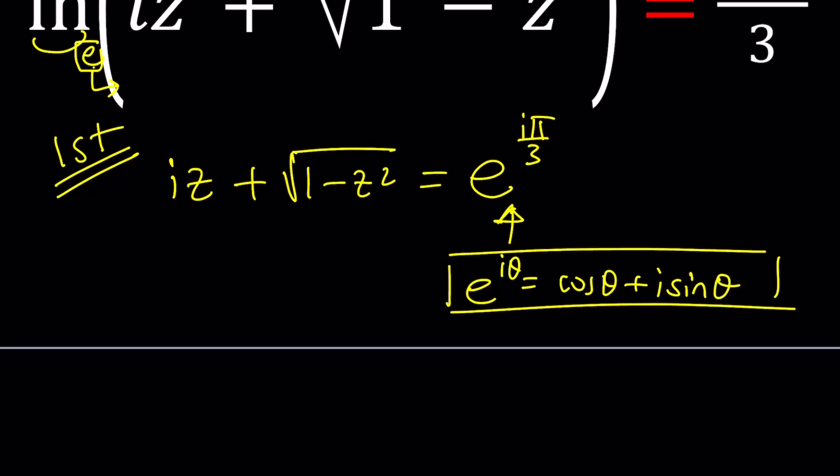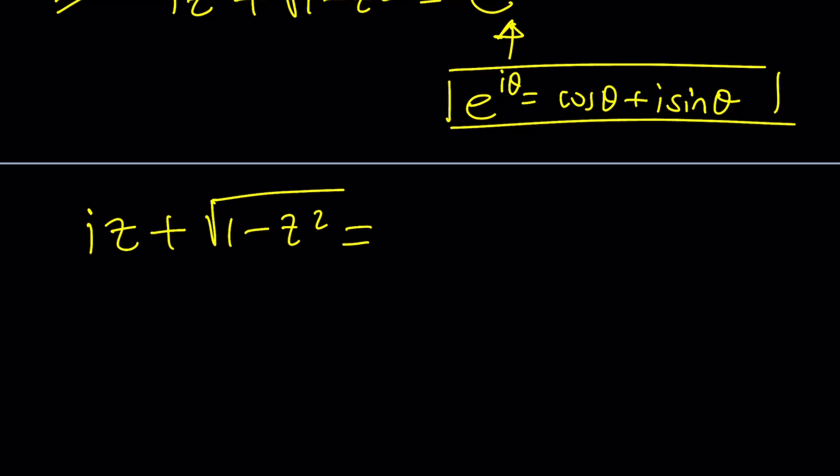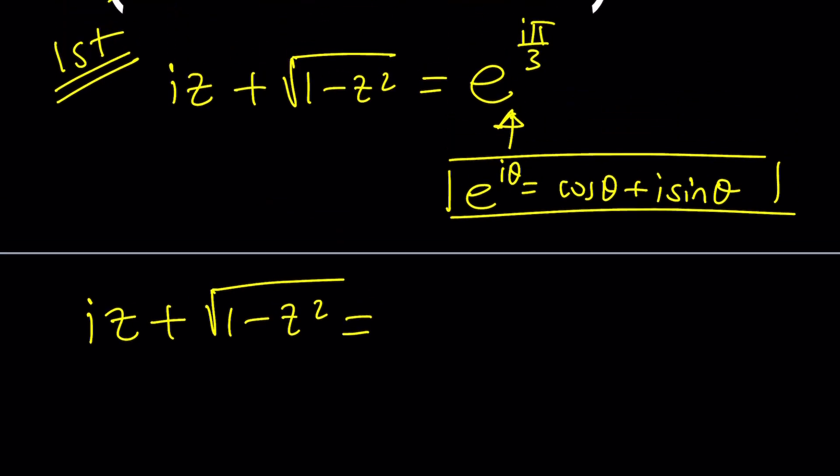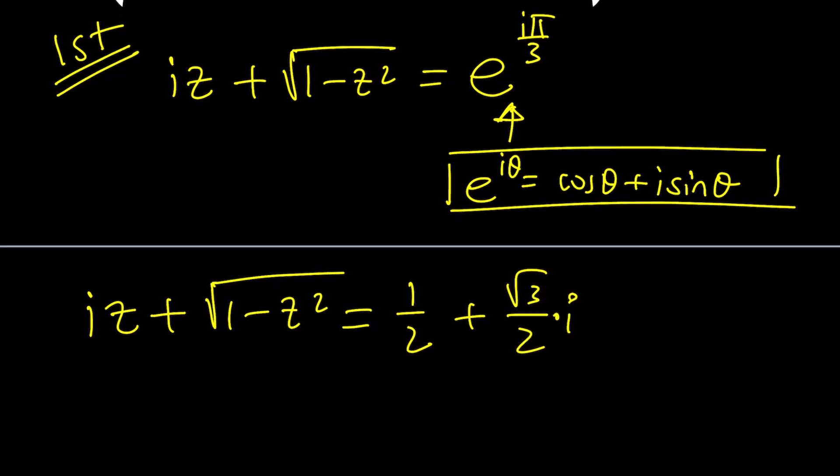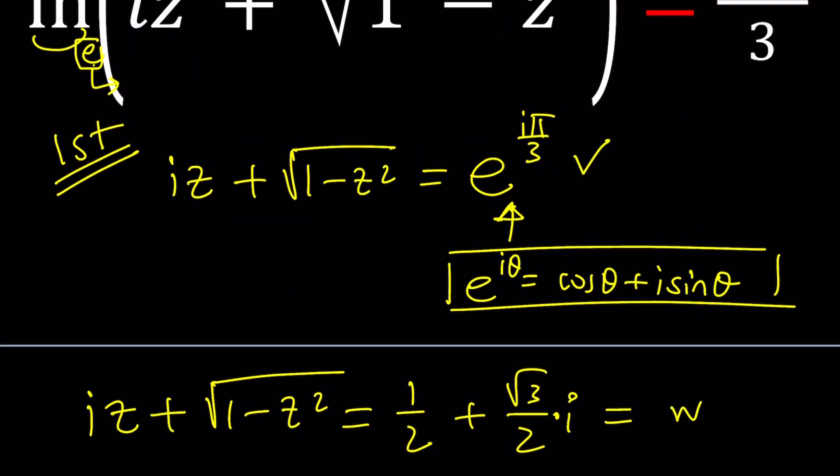So here's what I'm going to do. I'm going to first write this in standard form. What does e to the power iπ/3 mean? Well, e to the power iθ means cosine θ plus i sine θ, thanks to Euler. This is just mind-blowing. It's amazing. And you can definitely prove it. And so we're going to replace θ with π/3.